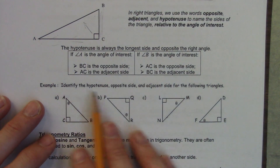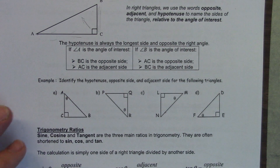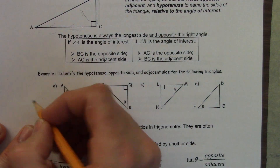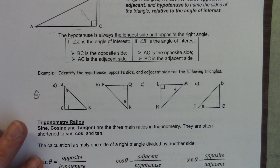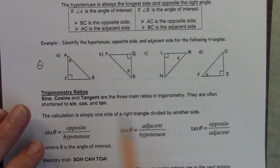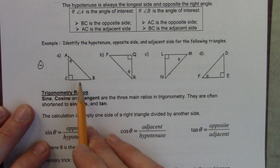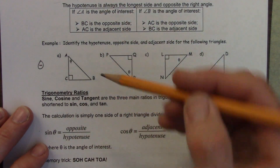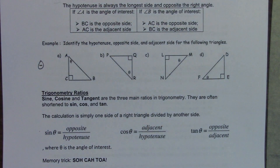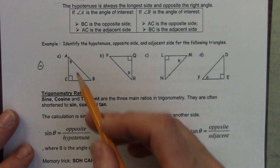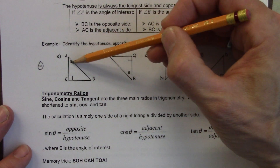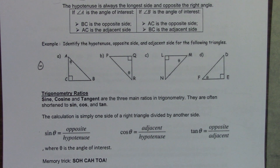Now we'll identify the hypotenuse, opposite side, and adjacent side for the following triangles. The theta symbol - a circle with a line through the middle - represents the angle of interest. For each triangle we're going to use labels O, A, and H. Jadane, what label will I use for AC if theta is the angle of interest - opposite, adjacent, or hypotenuse?